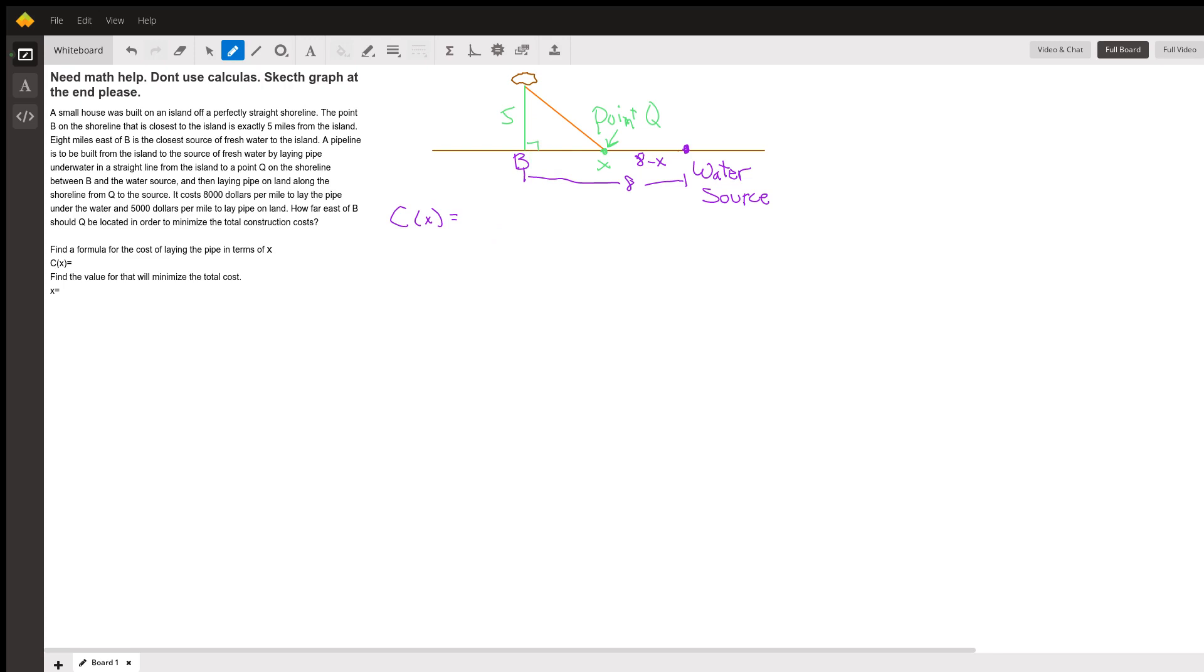Which is going to cost $8,000 per mile, and the length of that orange pipe is going to be the diagonal of a right triangle with a side of X and a side of 5, plus now $5,000 for the overland portion. And the distance, the length of that, is going to be 8 minus X. So there we go.